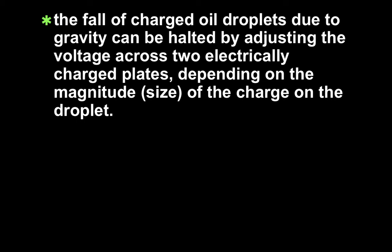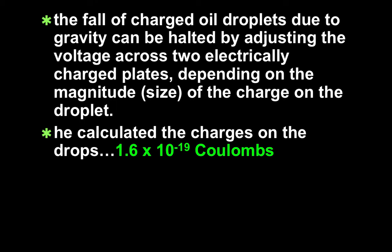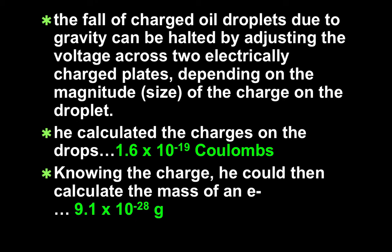He calculated the charge on the drops to be 1.6 times 10 to the minus 19 coulombs. Millikan took this to be the charge of a single electron. And once he knew the charge of an electron, he could use the charge-to-mass ratio determined by Thomson to determine the mass of an electron. He determined the mass of an electron to be 9.1 times 10 to the minus 28 grams.